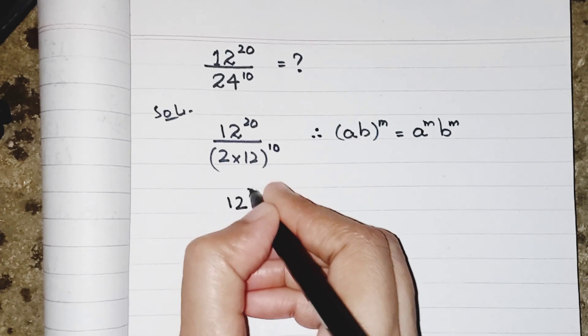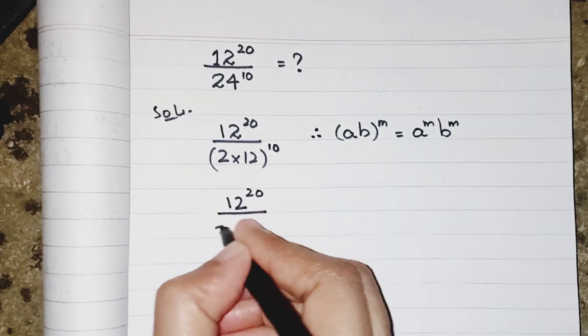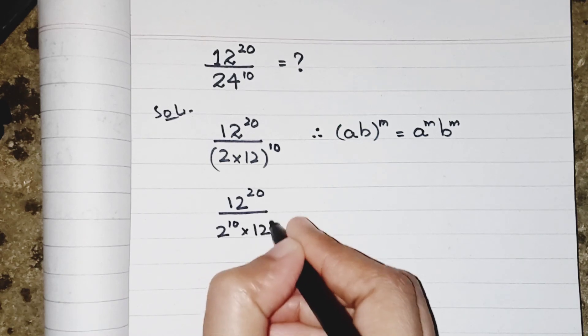So I can write as 12 power 20 over 2 power 10 multiplied by 12 power 10.